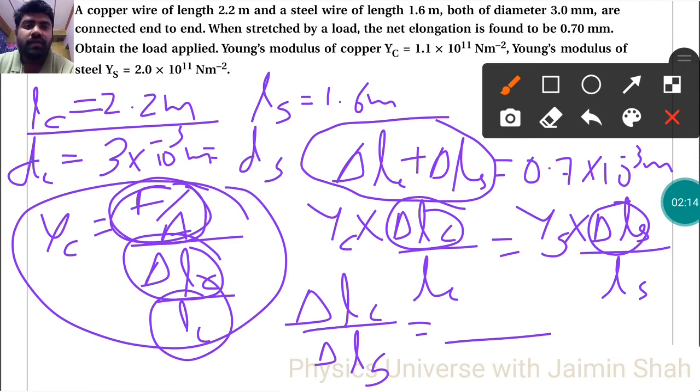So see, A is pi R square. So diameter is given also, because radius is equal to diameter by 2. And Yc and Ys both are given. So by putting all the values we can find here force, which is nothing but load applied.